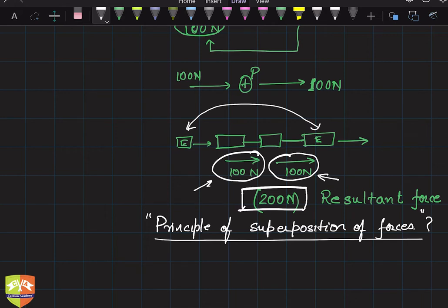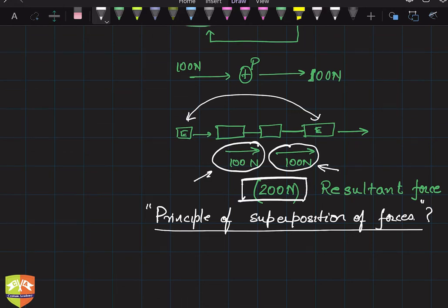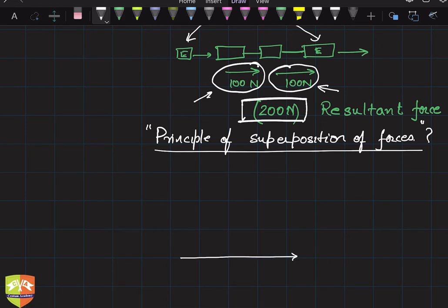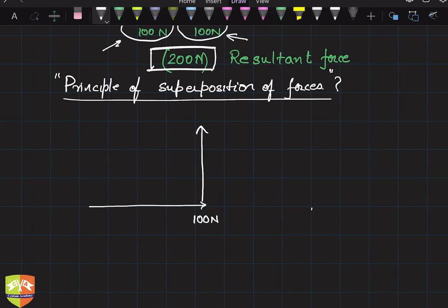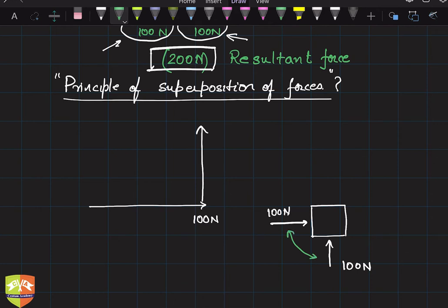So, forces are vector quantities: if acting in the same direction they get added up; if acting in opposite directions they get subtracted. There is also a third case where forces are not in the same line of action. For example, if one friend pushes an object with 100 newton in the east direction and another friend pushes with 100 newton in the north direction, the object will tend to move diagonally. The total resultant force to replace these two is not 100 plus 100 equals 200, but rather 100√2 newton.